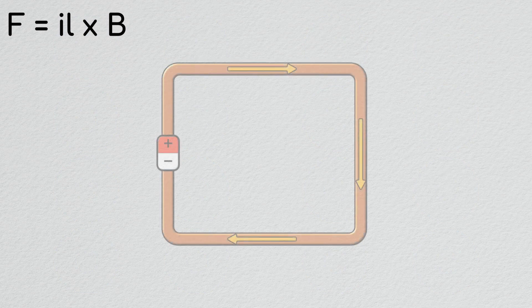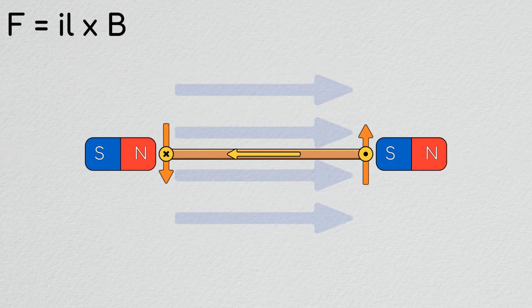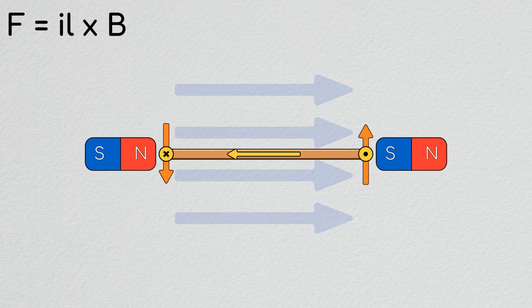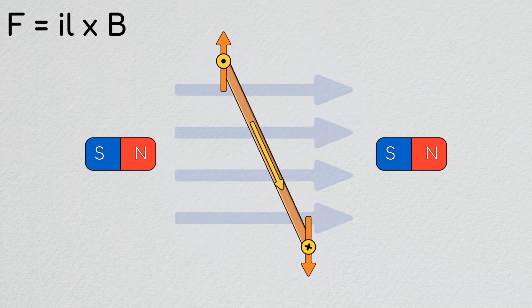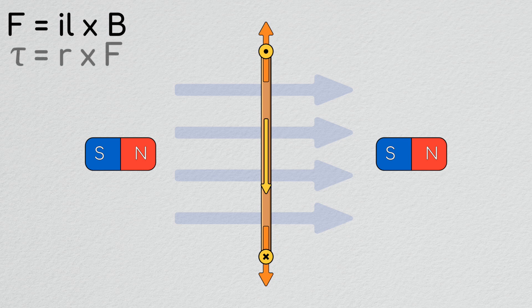Now let's apply this idea to a closed loop of wire. If we have a square loop with current running around it as shown here and we position it in a magnetic field, the sides which are now shown as into and out of the page will have forces applied to them due to the magnetic field. These forces will be in opposite directions and they will create a net torque on this loop of wire. This will rotate the wire until the two forces eventually come to rest in line with each other.